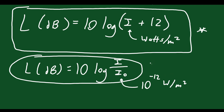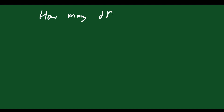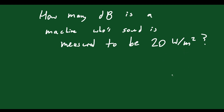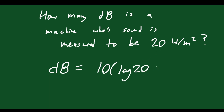Let's answer a question: how many decibels is a machine whose sound is measured to be 20 watts per meter squared? That's the intensity of the noise measured — 20 watts per meter squared — and the question is how loud it sounds in decibels. Using the equation: decibels equals 10 times log of the intensity, which is 20, plus 12. If you calculate that, you get 133 decibels.